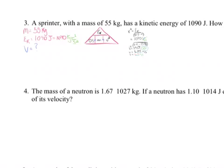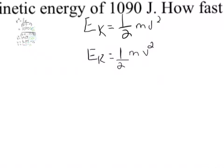Now we're going to solve algebraically to isolate for velocity — that's the way I want you to be able to do it. We've got the formula: EK is equal to 0.5 mv squared. Do the numerator and denominator line, and then separate this out all the way down.